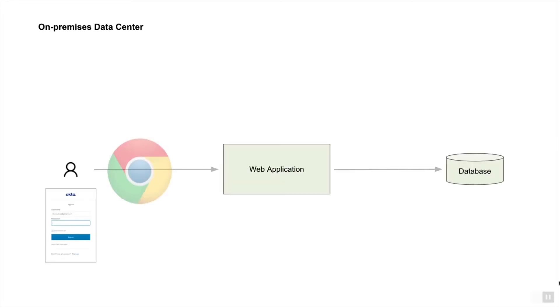In order to understand delegated authentication, let's first take a look at a typical monolithic application. Here you see a web application deployed on the server with an application database. The application data will be stored in the database and the business logic will be the responsibility of the web application itself. The web application could be written in Java Spring Boot, .NET, or Python — it does not matter. A user is using the browser to access the application.